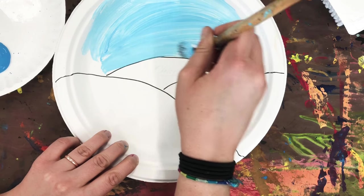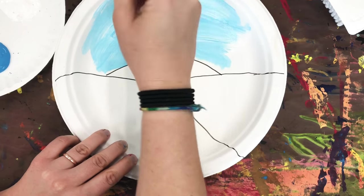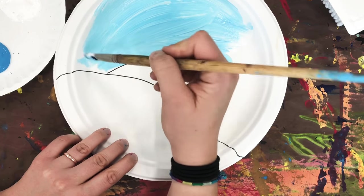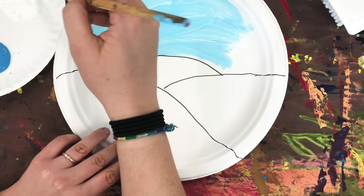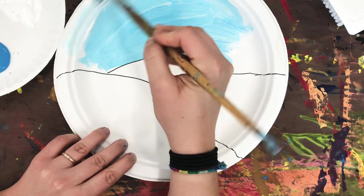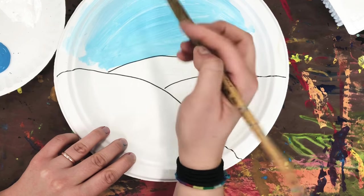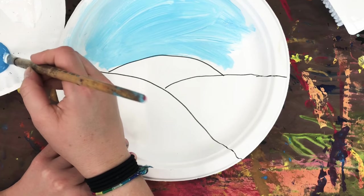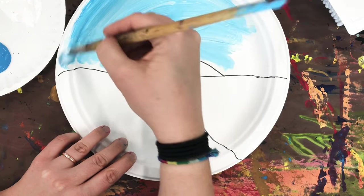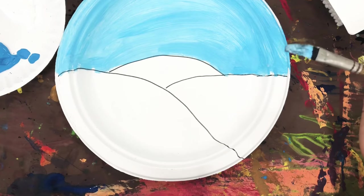I'm going to paint right up to my lines, and I'm even going to paint on the top of my plate. When I feel like I need some more paint, I'm just going to get a little bit more white paint and keep painting. And now it's looking a little bit lighter, so I can just kind of touch that blue paint and add some blue to make it darker.